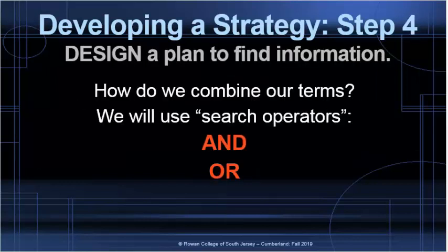Now that we've come up with a list of different terms, we can go ahead and design a plan to find information. What we'll have to think about is how we're going to combine our terms so that we can get the information back that we want. For this, we're going to use something we call search operators, and the particular operators we'll be using today are AND and OR.